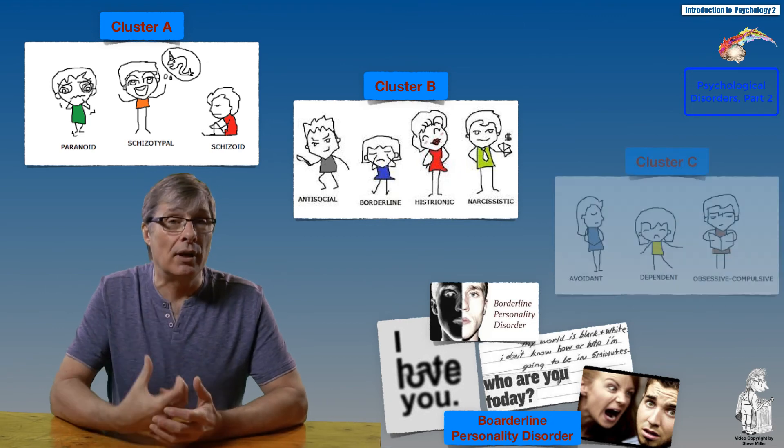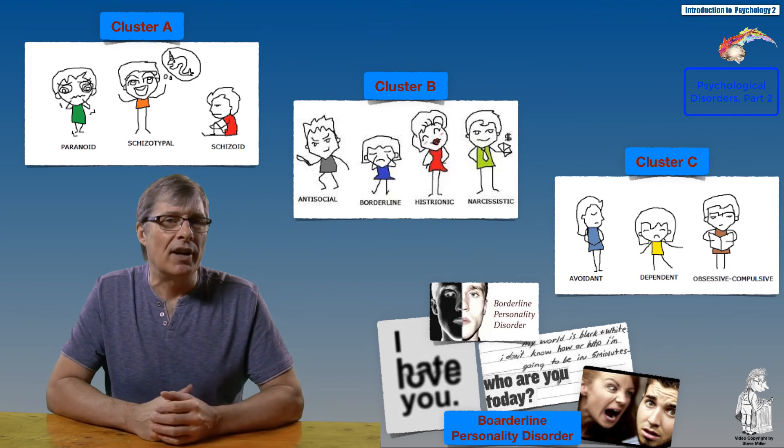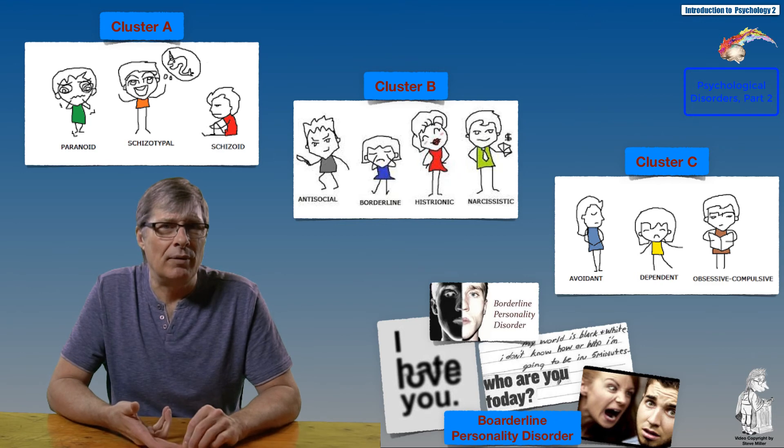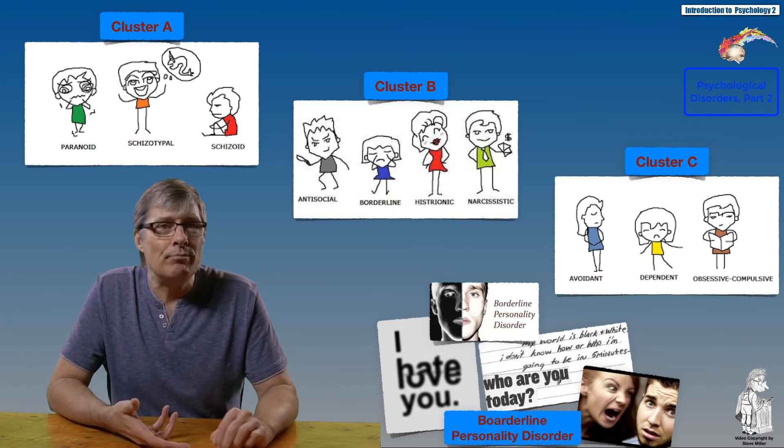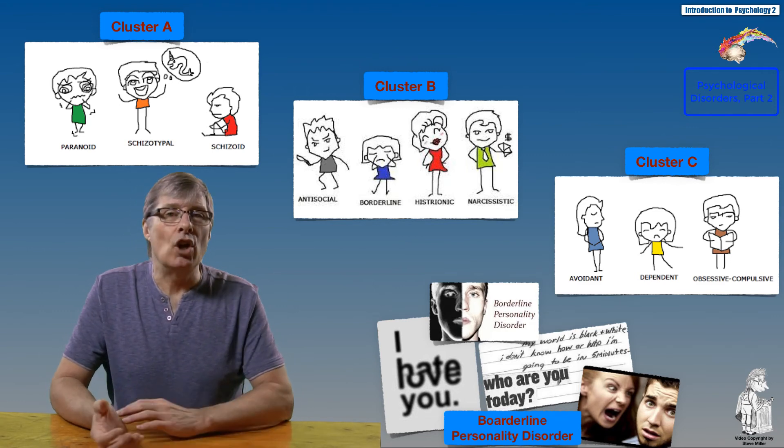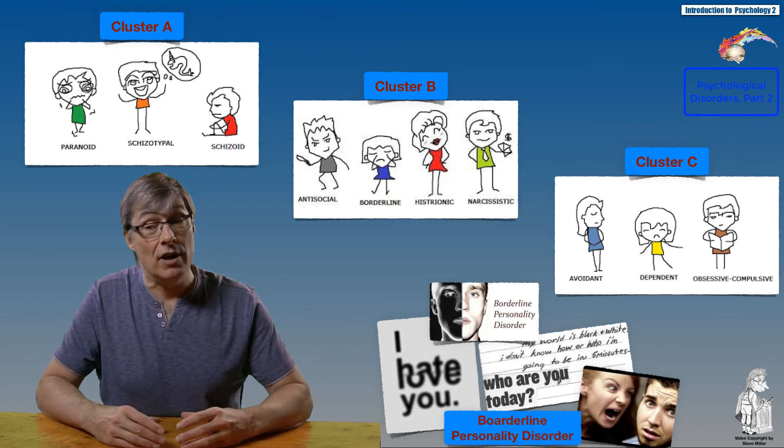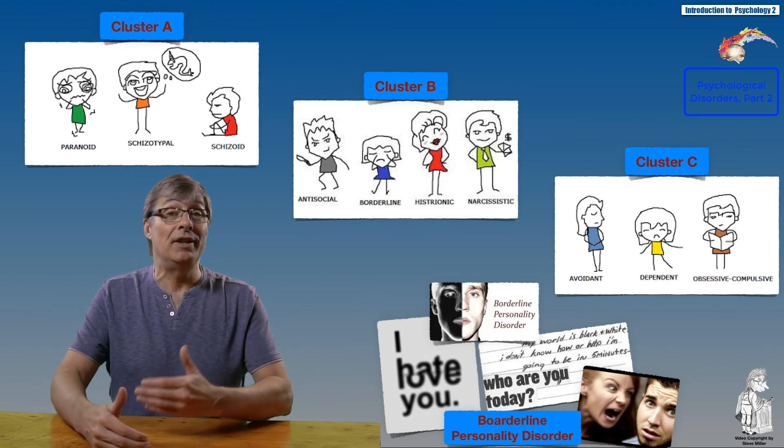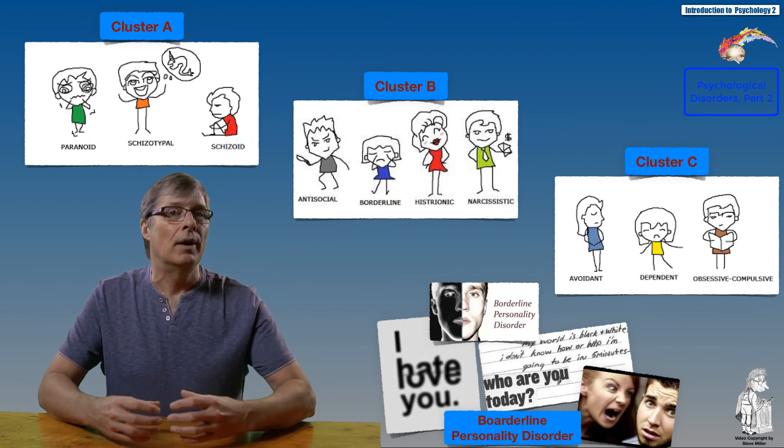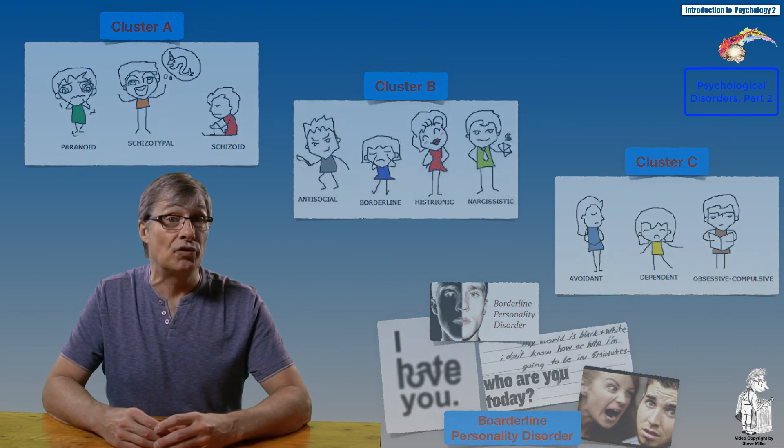Cluster C personality disorders are characterized by fearful and/or anxious behavior. Examples would be obsessive-compulsive personality disorder, avoidant personality disorder, or dependent personality disorder. We're not going to go through each of these—I just wanted you to be aware that with the DSM-5, because there's so many different personality disorders, they choose to cluster them according to basic classes of conditions.